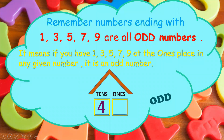Also remember, numbers ending with 1, 3, 5, 7 and 9 are all odd numbers. It means, if you have 1, 3, 5, 7 or 9 at the 1's place in any given number, it is an odd number. Always remember, the 1's place in any given number decides whether the number is odd or even.